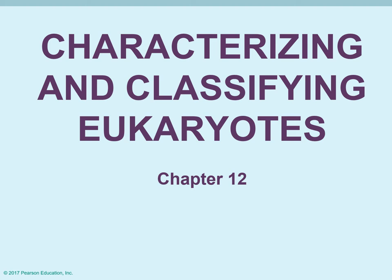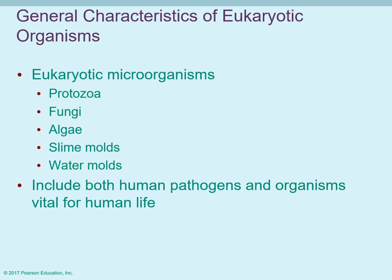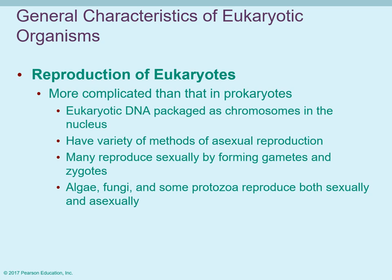This is chapter 12. It deals with the characterization and classification of eukaryotes. The eukaryotic organisms that are microorganisms we will be looking at, always included in the general field of microbiology, are protozoans, fungi, algae, the slime molds, as well as the water molds. There are both human pathogens in here, as well as some microorganisms that are necessary for human survival and life to occur.